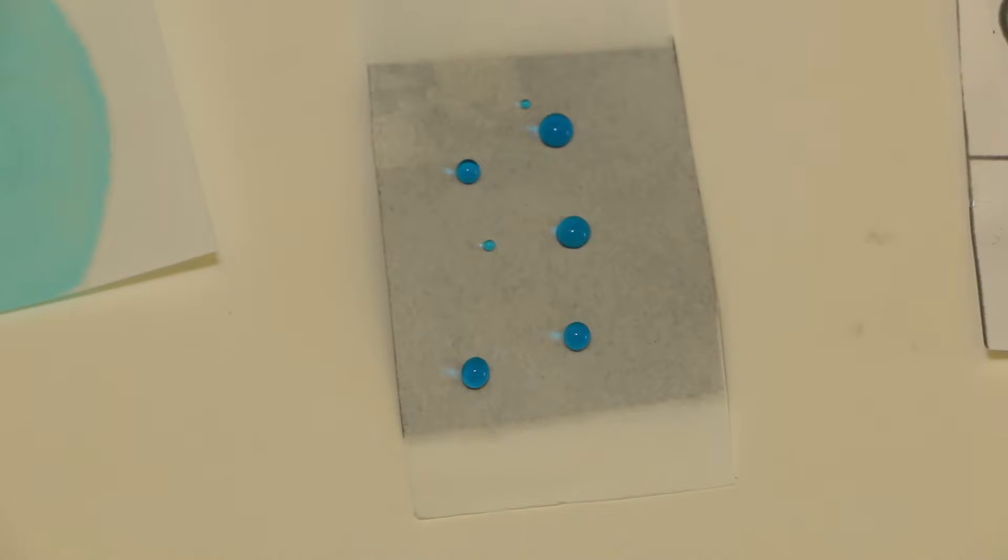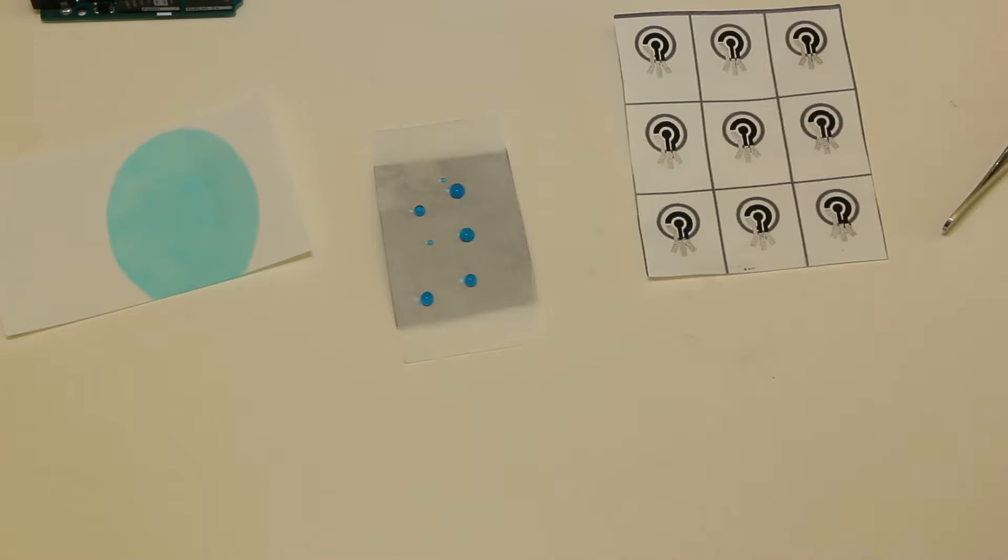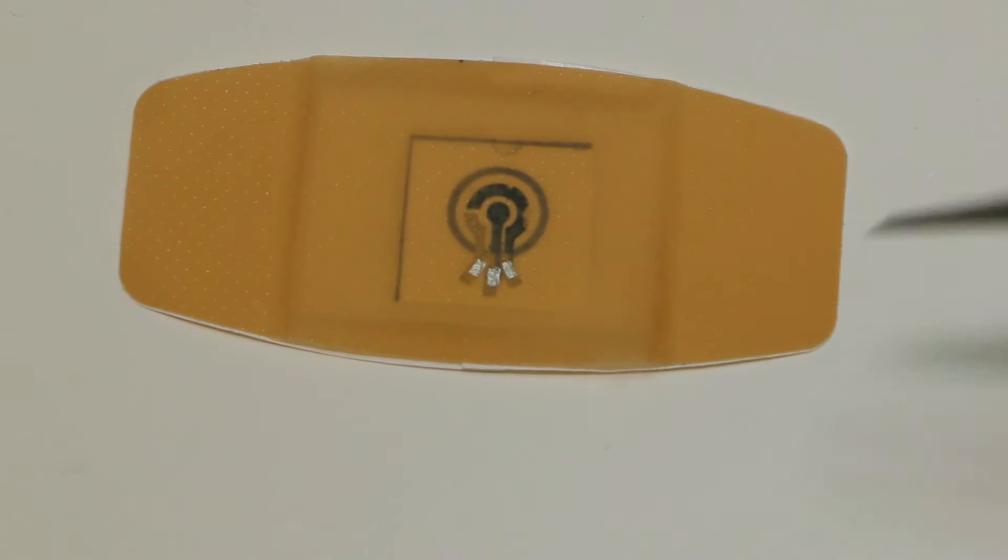These devices will always behave the same no matter if they are in environments with high humidity or in dry places like the desert. Our goal in paper diagnostics is to miniaturize electronics so much that these paper devices can be embedded into fabric or other existing technologies to make, for example, smart bandages